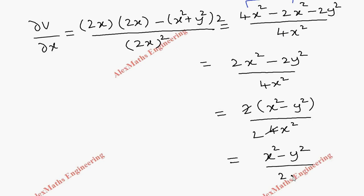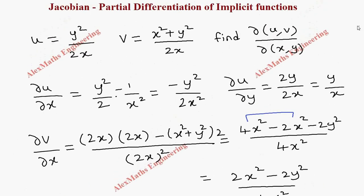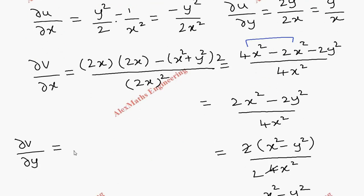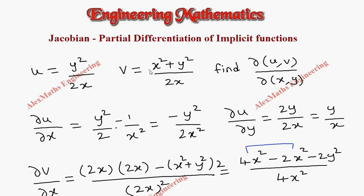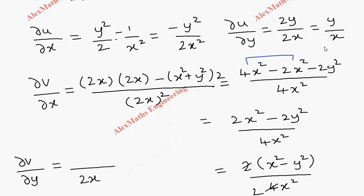In the same way, let's find ∂v/∂y. Since x is constant, we don't need the quotient rule — the denominator 2x stays as it is. The derivative of the constant term x² is 0, and y² differentiates to 2y. After canceling the 2, we get y/x. So we have now found all four partial derivative terms.